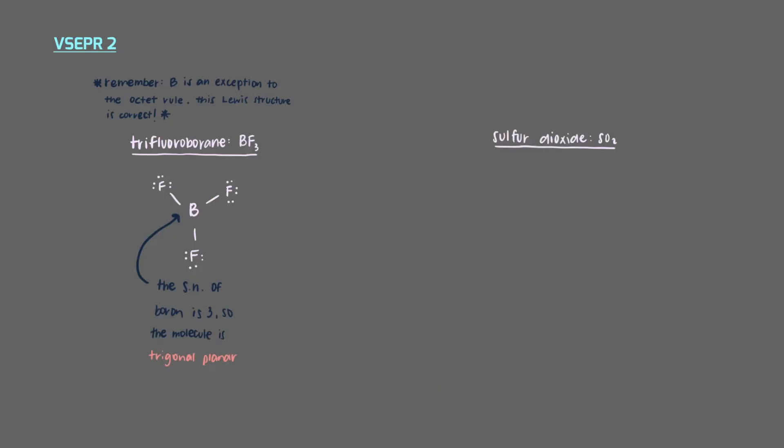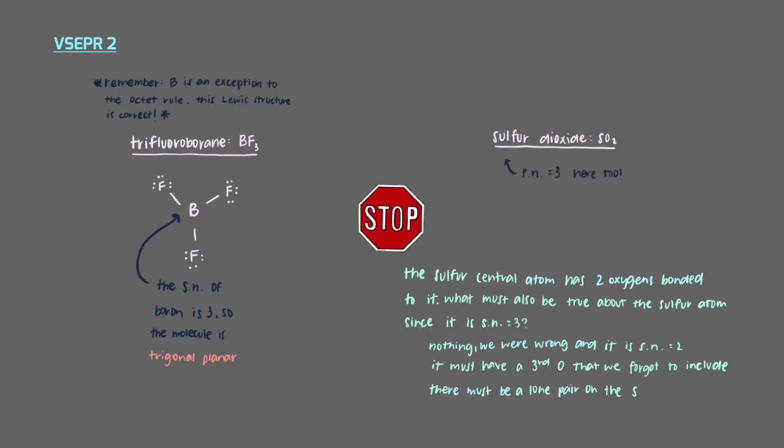But what if we had this molecule, sulfur dioxide, which also has steric number 3? The sulfur central atom has two oxygen atoms bonded to it. What also must be true about the sulfur atom since it is steric number 3?